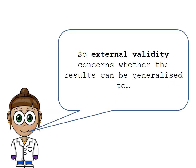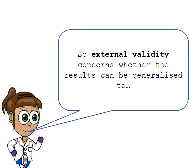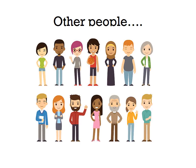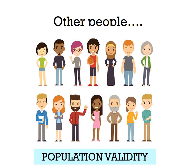External validity concerns whether results can be generalized to different situations, including to other people. If you had a representative sample of the whole population, your study would have population validity. But if your sample consisted only of English students aged 16 to 18, you couldn't generalize your findings to the whole world, and your study may lack population validity.